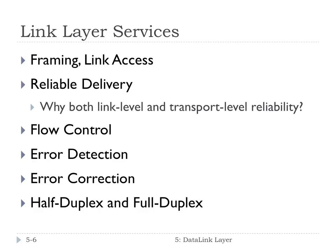Here's a list of services that link layers provide. Number one: framing and link access. This means we encapsulate a datagram into a frame — we add a header and a trailer with additional information. We might have to access the link in a special way. If it's a shared link, like a wireless link where only one person can be talking at once, the link layer provides a service called Media Access Control, or MAC. MAC addresses are used in frame headers to identify the source and destination of the link layer, and that's different from the IP address.